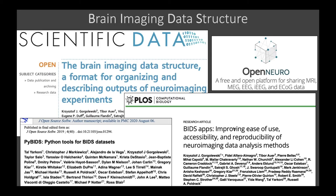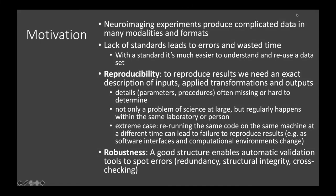What is the motivation for a common standard? Neural imaging experiments produce complicated data in many modalities. You have your MRI data, EEG data, and depending on the system, different data formats and different software packages. There's a lack of standards, and this leads to errors and wasted time. When we have standards, it's much easier to understand a dataset, reuse it, and spot errors in it.